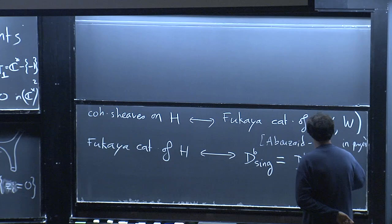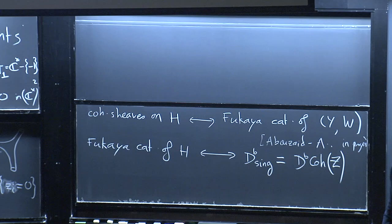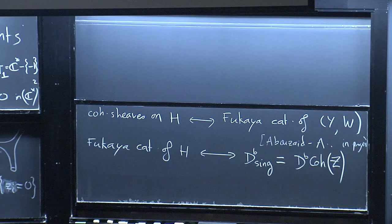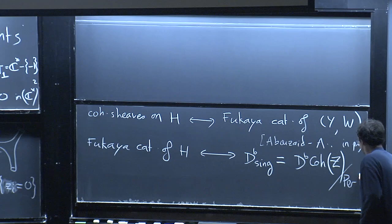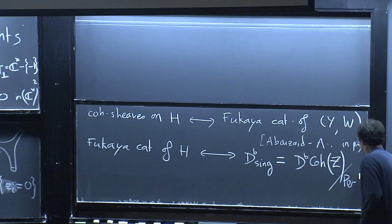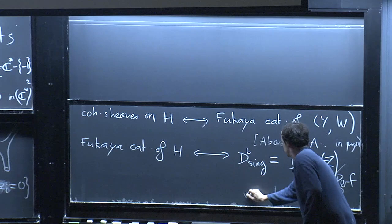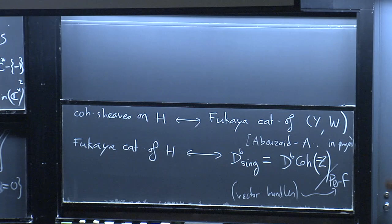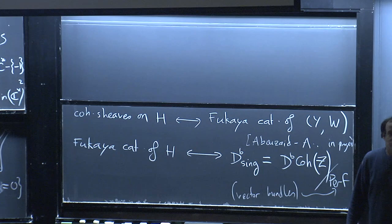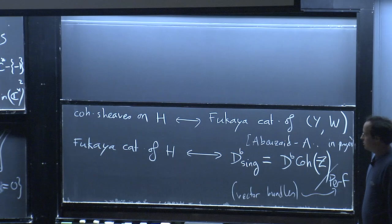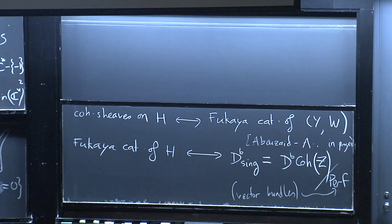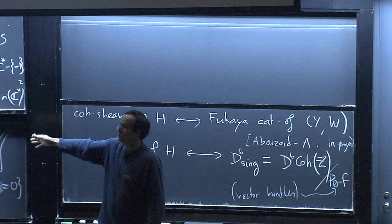What you're supposed to do is look at coherent sheaves on Z — the union of toric strata in the toric variety Y — but discard anything that looks like a vector bundle. There's a construction called a categorical quotient which takes coherent sheaves and discards everything that is globally a vector bundle or a complex of vector bundles. This is meant to measure exactly how singular this space is — a more modern version of classical singularity theory. It tells you how singular Z is. In our case, Z is singular because it's a union of smooth components intersecting along divisors.